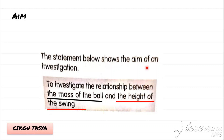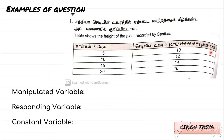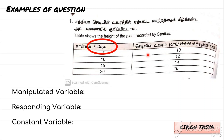So now we are going to look at examples of questions. The table shows the height of the plants recorded by Sandia over a number of days, with the days and the height of the plants. As we can see, we can find the Manipulative Variable and Responding Variable — just as I showed earlier. The first column or first side of the table will be your Manipulated Variable.